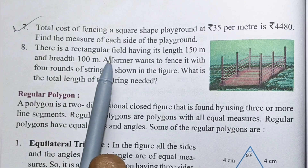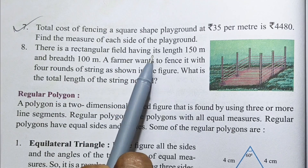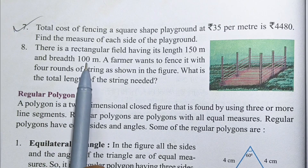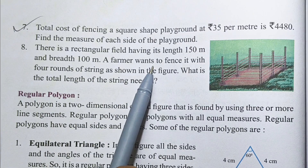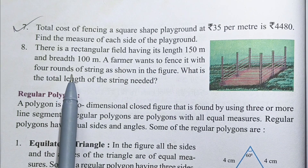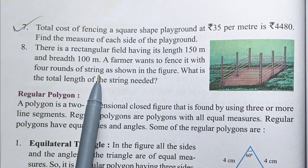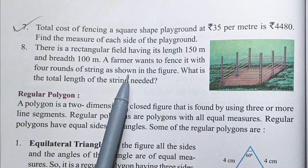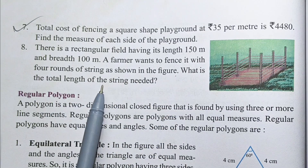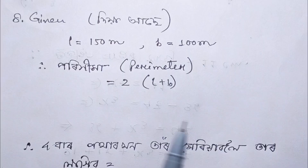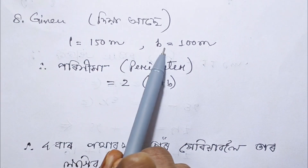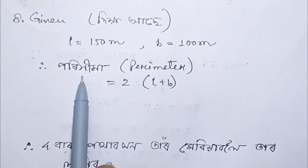There is a rectangular field with length 150 meters and breadth 100 meters. A farmer wants to fence it with four rounds of string. What is the total length of string needed? Length = 150 meters, breadth = 100 meters.